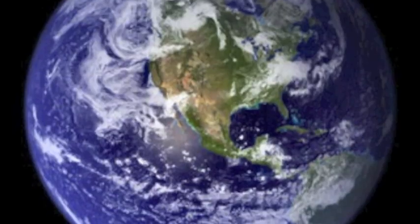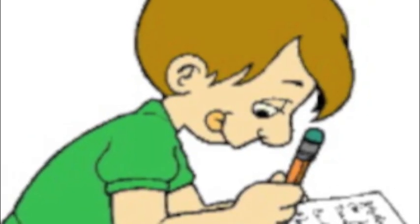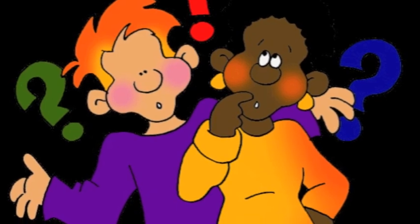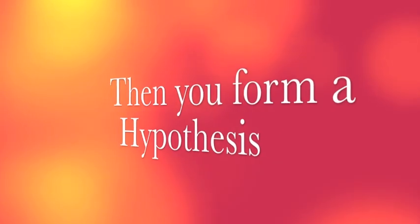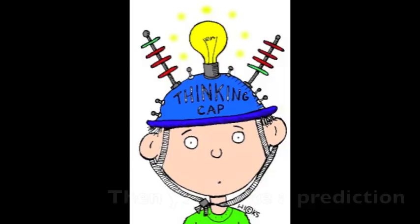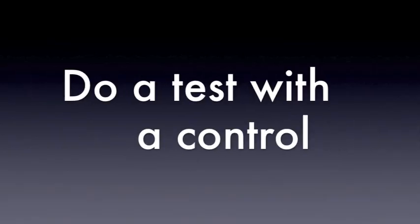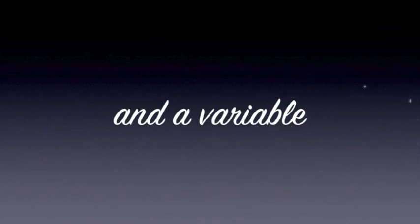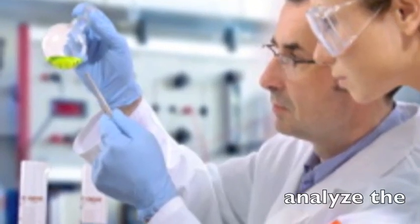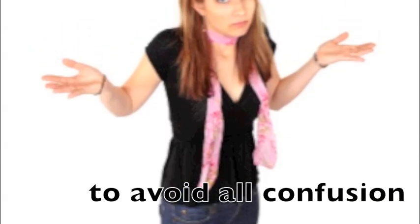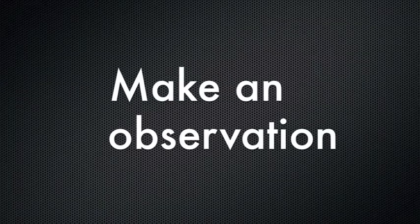First you make an observation of the world around. Take notes and record all the things that you found. Then you ask a simple question, something that you want to learn. Then you form a hypothesis to explain what you observe. Then you make a prediction about how it's gonna go. Do a test with a control and a variable. Then you analyze the data and draw a conclusion. Do the scientific method to avoid all confusion. Make an observation,